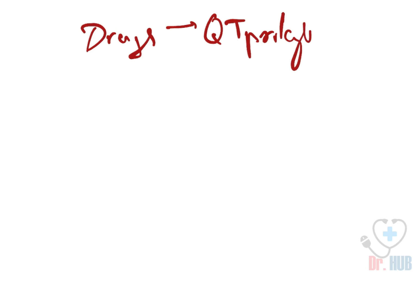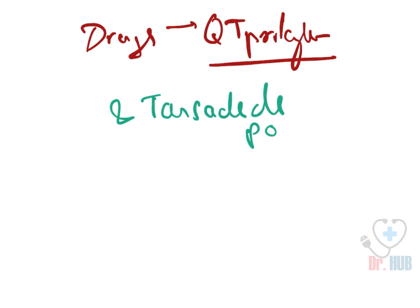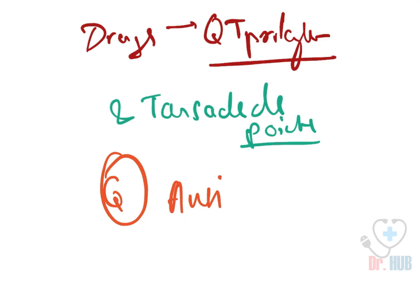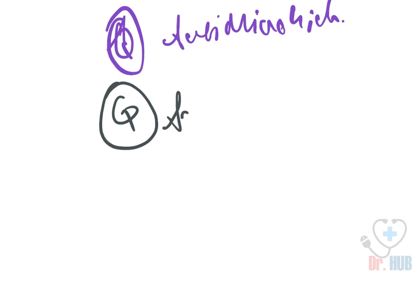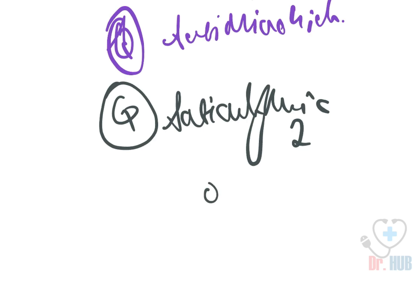We are looking at the drugs which cause QT prolongation and torsades de pointes. The questions being: name the antidepressants associated with QT prolongation, name the antimicrobials associated with QT prolongation, and name the antiarrhythmics associated with QT prolongation. We will look at all these answers and learn more in this video.